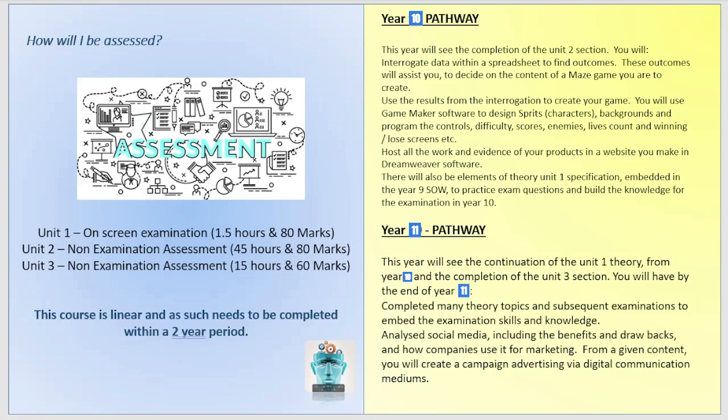So how are you assessed? Unit 1 is an on-screen examination, an hour and a half long, worth 80 marks and 40%. Unit 2 is a non-examination assessment worth 60 marks and 20%. This is a linear course, meaning everything is entered at the same time at the end of the two-year period. In Year 10 you'll be completing Unit 2 and parts of the Unit 1 theory.